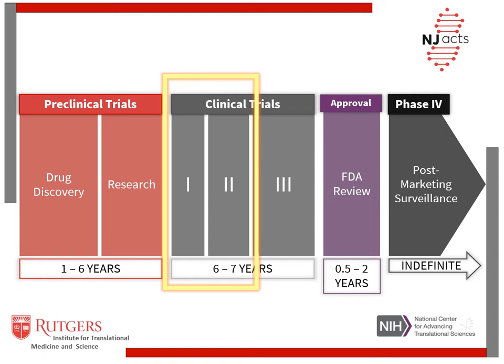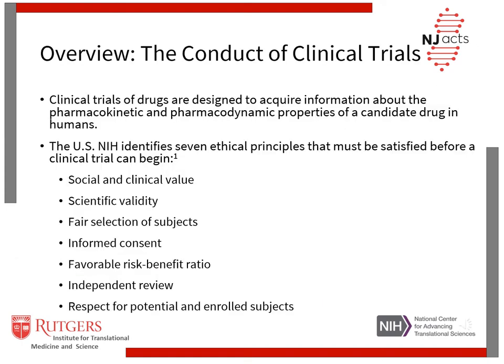Shown here is a general timeline of drug development with Phase 1 and 2 clinical trials outlined. Clinical trials of drugs are designed to acquire information about both the pharmacokinetic and pharmacodynamic properties of a candidate drug in humans, where pharmacokinetics is the study of what the body does to the drug and pharmacodynamics is the study of what the drug does to the body. The United States National Institutes of Health identify seven ethical principles that must be satisfied before a clinical trial can begin.